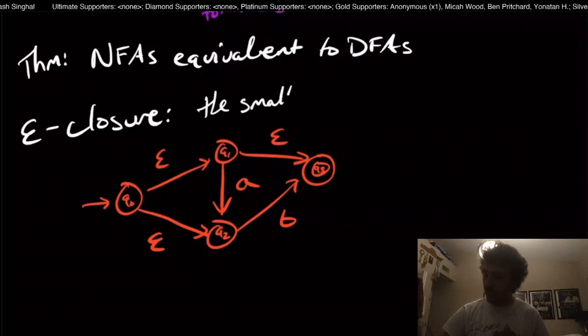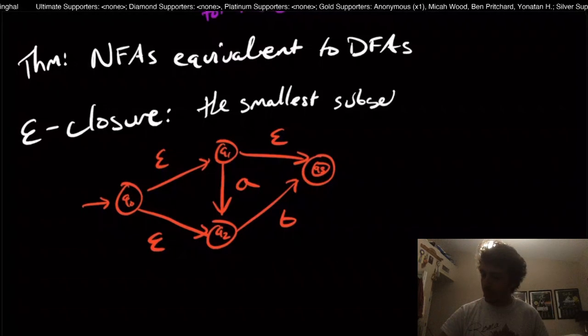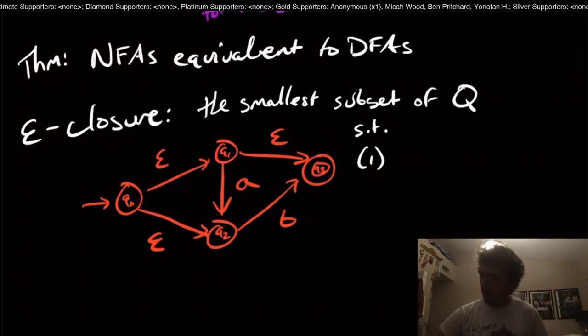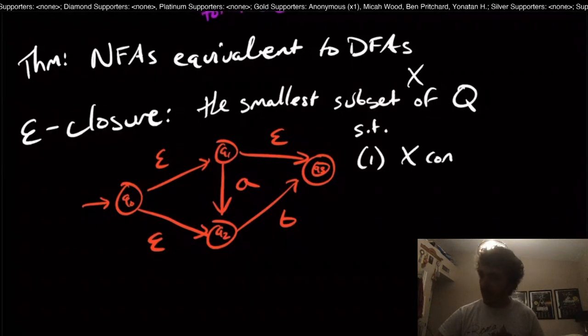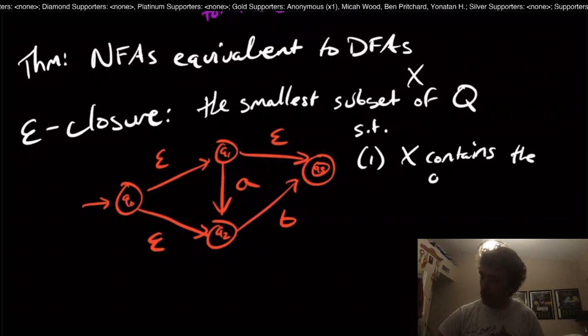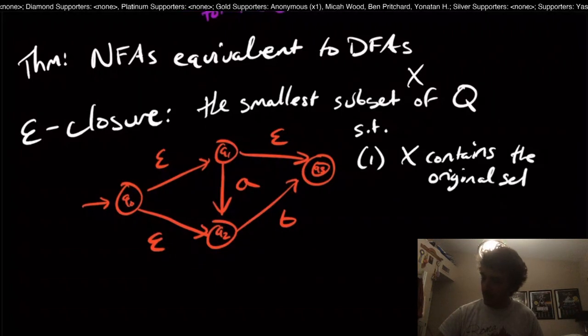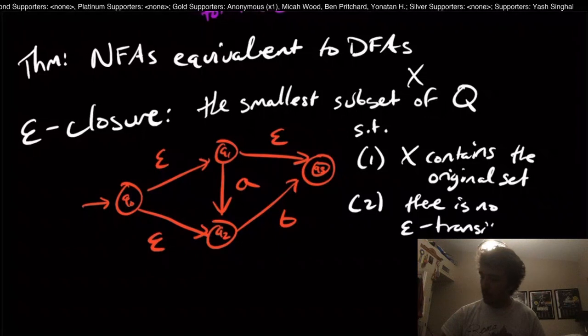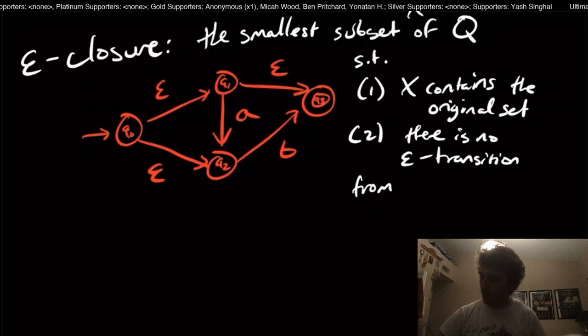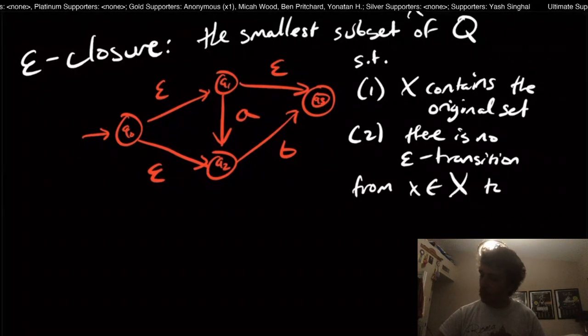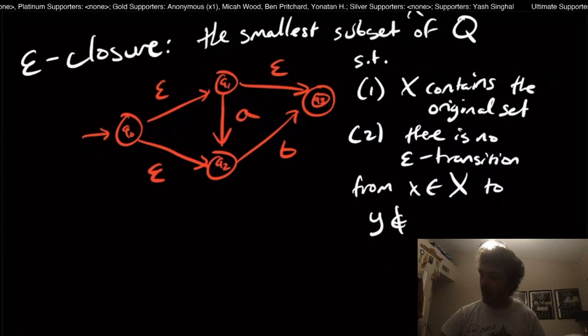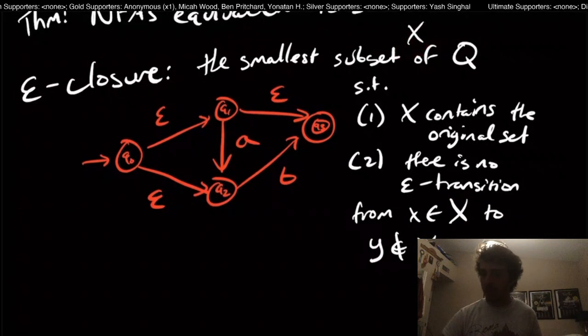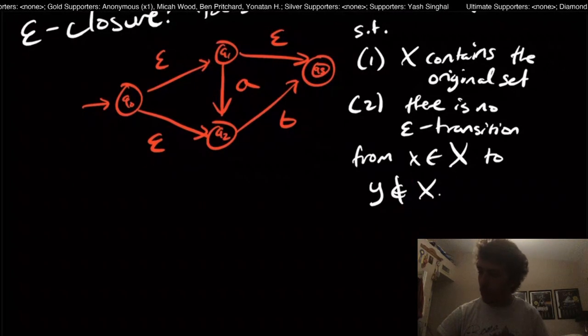So what is the epsilon closure? It's the smallest subset of Q, the set of states, such that, one, let's just call the subset X. So X contains the original set. I'll explain what that is in a second. And two, there is no epsilon transition from some state little x in big X to a state y, which is not in X. So there's no transition that goes from inside of this subset X that we're making here to a state outside.